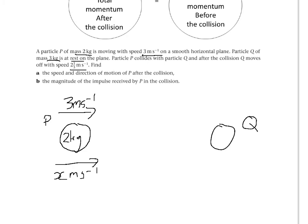Particle Q, let's write down what we know about. Its initial mass is 3 kg. Its initial speed is 0. And its velocity at the end is 2 and a third meters per second to the minus 1.